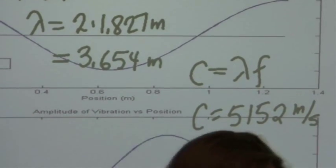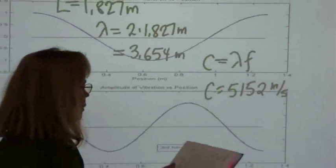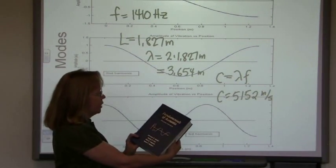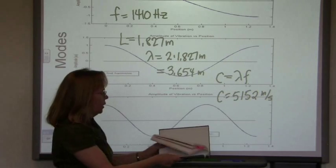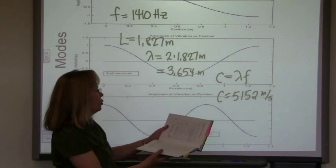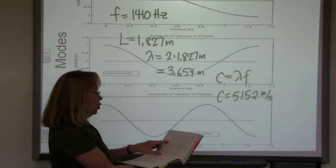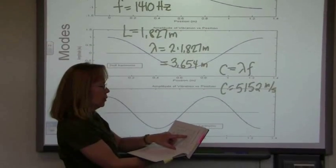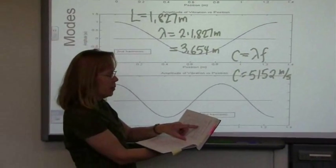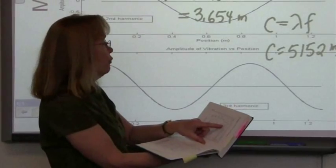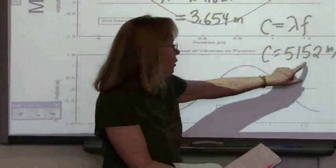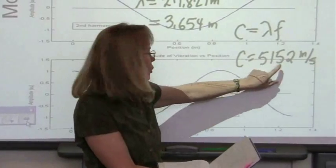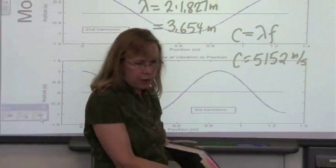And if I have a reference text here, this is Fundamentals of Acoustics written by some professors at the Naval Coast Graduate School. And in the chart for aluminum, they have the speed of the longitudinal waves on a bar as 5,150 meters per second. So you can see that we're extremely close to that value by this simple demonstration.